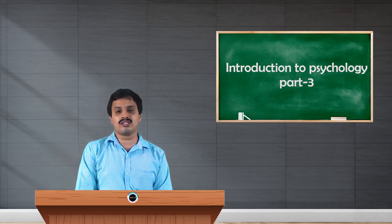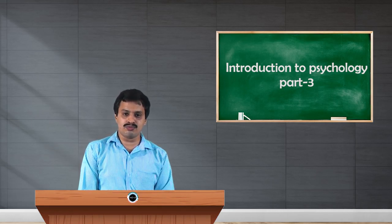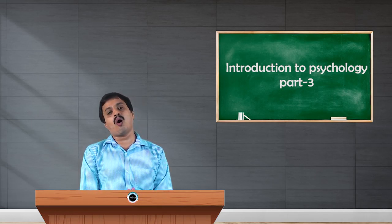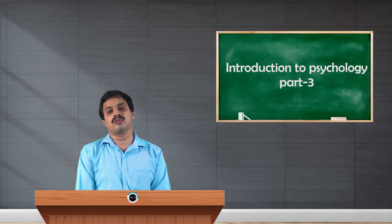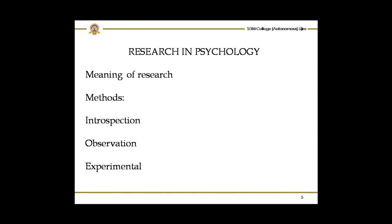Next, moving to the next research method in psychology — that is the observation method. What is observation? Observation is nothing but observing any particular behavior. You can observe behavior in any natural setting or in an artificial setting. If behavior is observed by the psychologist in a natural setting, it is called the naturalistic observation method. If it is studied in the laboratory by controlling certain factors or extraneous variables, it is called laboratory observation or scientific observation.